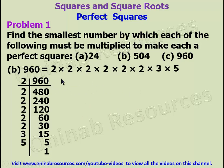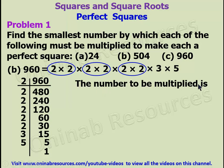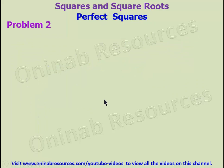We group the 2s into pairs: the first pair, the second pair, and the third pair — all three pairs of 2s are complete. But 3 and 5 each cannot be grouped into pairs. So the number to be multiplied is 3 times 5, which gives 15. So we have done justice to Problem 1 and we move to Problem 2.